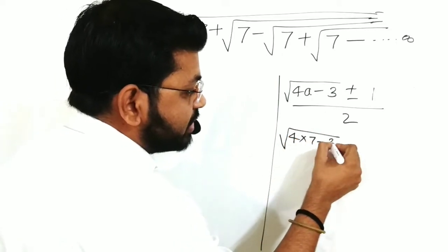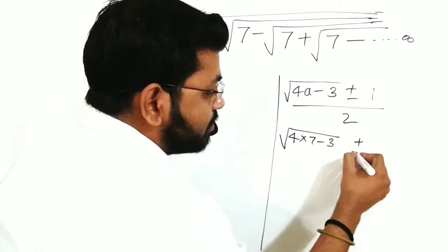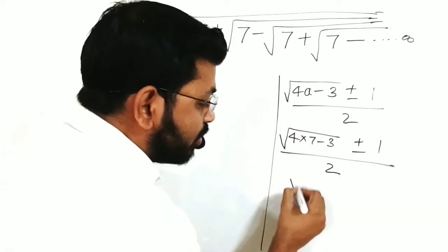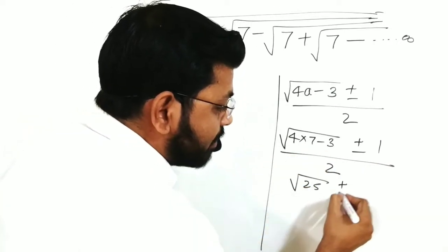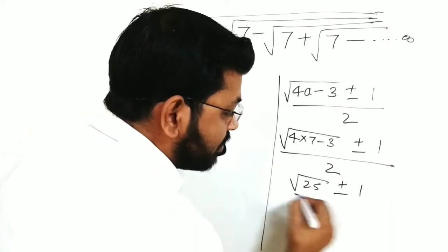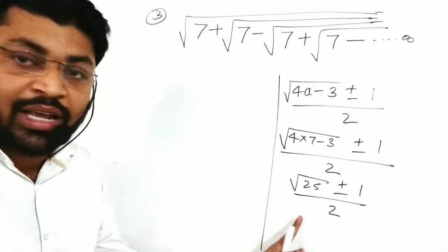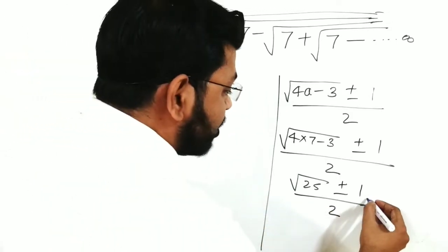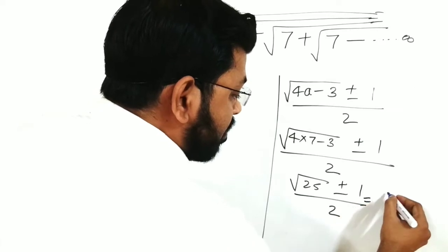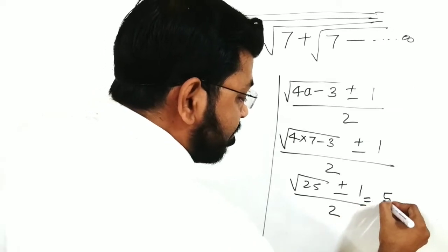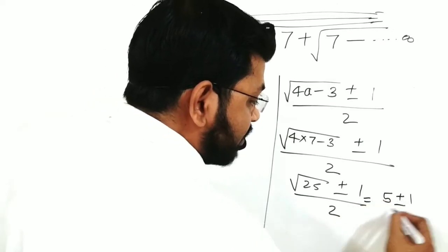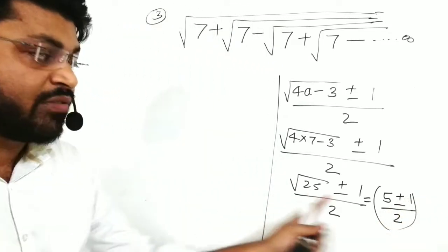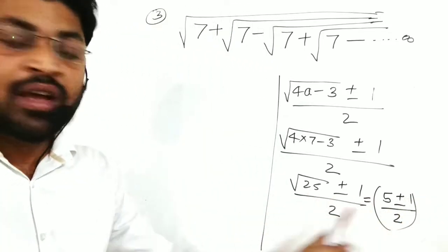For alternating signs, the formula is (√(4a - 3) ± 1) / 2. So with a=7: 4×7 - 3 = 25, which gives (√25 ± 1) / 2. Since √25 = 5, this becomes (5 ± 1) / 2.